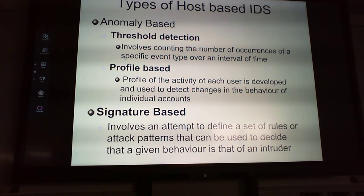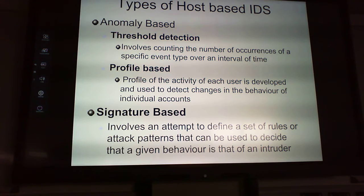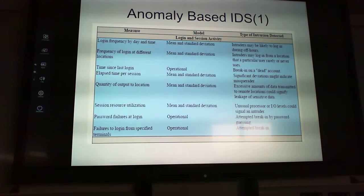Types of host-based IDS: anomaly-based, which counts occurrences of a specific event over an interval of time; profile-based, which builds a profile of user activity; and signature-based, which defines a set of rules or attack patterns. If a signature-based host IDS is poorly configured and looks for anomalies, we can get a high false positive rate if it isn't trained well.